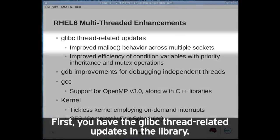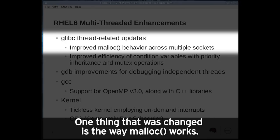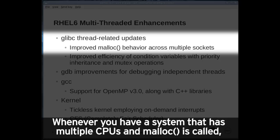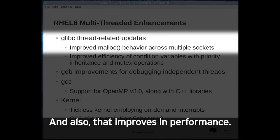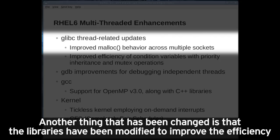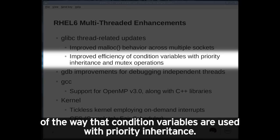In the glibc thread-related updates, one change is the way that malloc works. Whenever you have a system with multiple CPUs and malloc is called, it allocates memory from different memory pools so that each processor uses memory that's local to that processor, which improves performance. Another change is that the libraries have been modified to improve the efficiency of the way that condition variables are used with priority inheritance.